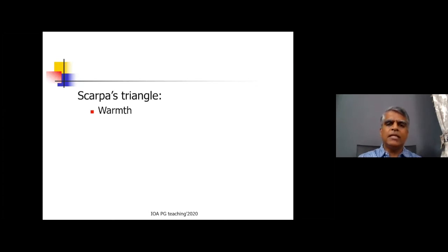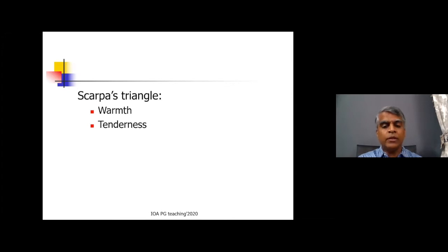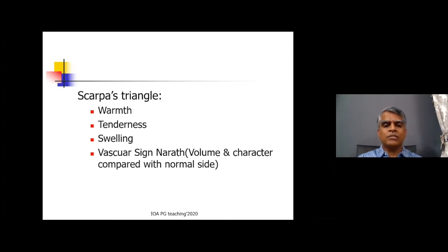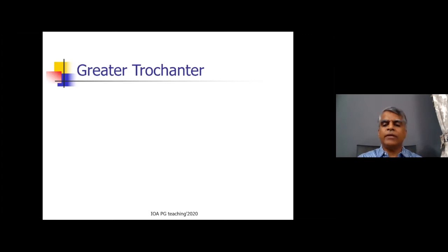In Scarpa's triangle, first test for warmth and tenderness. Check where the tenderness is - at the base of Scarpa's triangle where the femoral pulse is felt, half an inch below and lateral to the midpoint. Check for any swelling and the vascular sign of Narath - whether the femoral pulse volume is comparable to the opposite side. You can mention the vascular sign of Narath now or in special tests. If you keep it for the end without mentioning it, the examiner will definitely point out that you haven't palpated the femoral pulse.